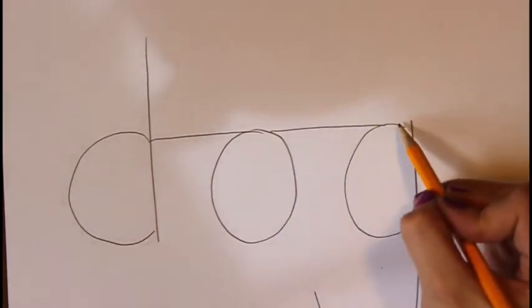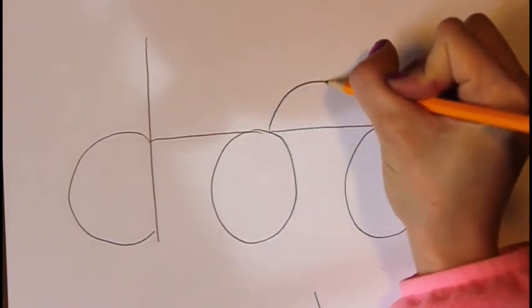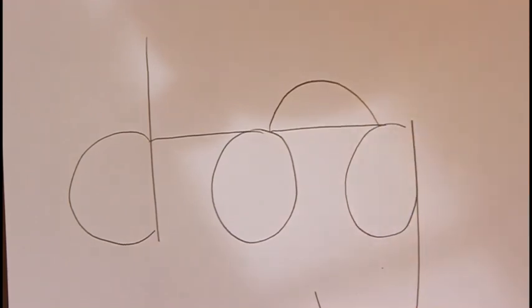Now, from the O to the G, we're also going to be doing a rainbow shape. So, kind of a half circle or a rainbow shape. I'm going to do that there.